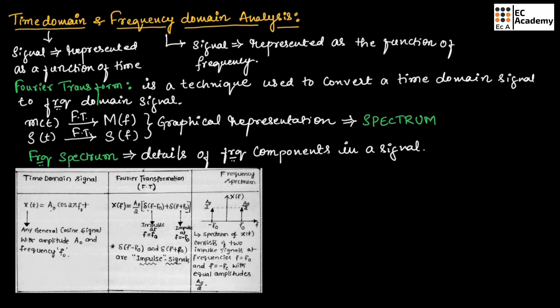Now let us see the Fourier transform of a few standard time domain signals. We will take a time domain signal, convert it into a frequency domain signal using Fourier transform, and finally write the frequency spectrum.